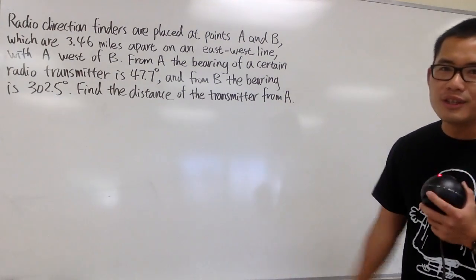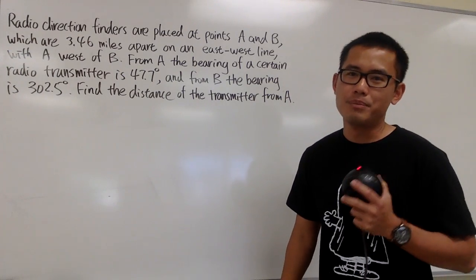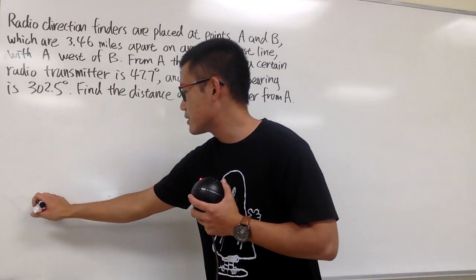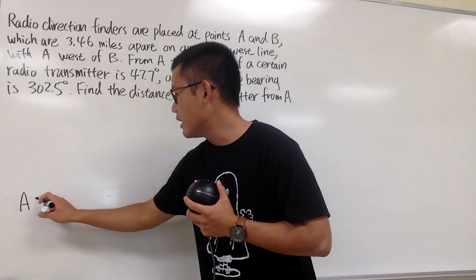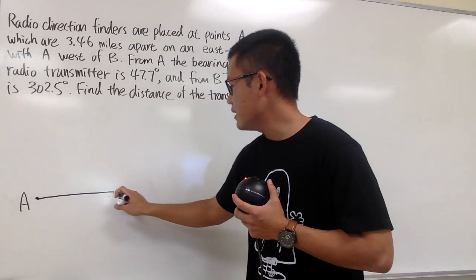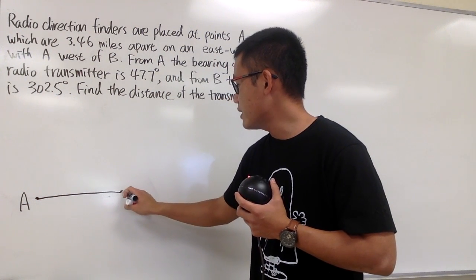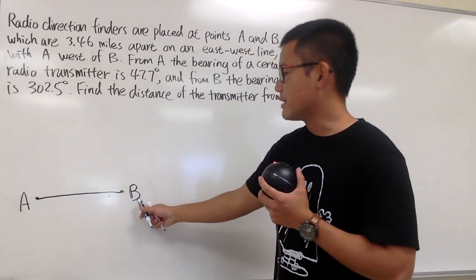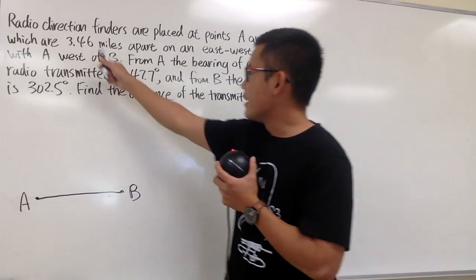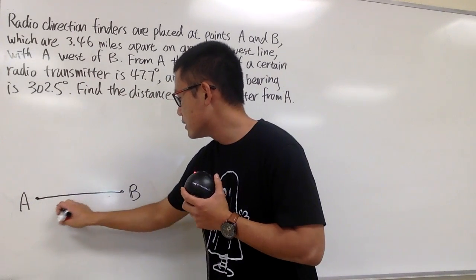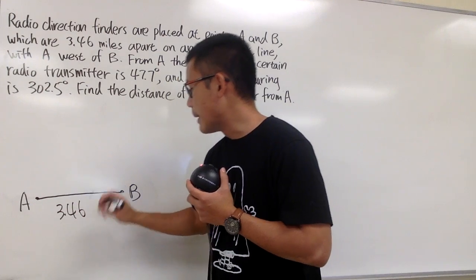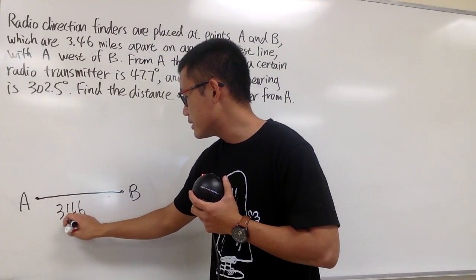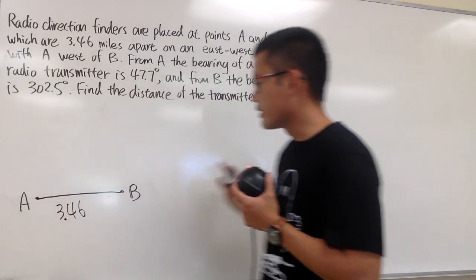For all these kinds of questions, we definitely have to draw a picture first. Let me mark point A and draw a horizontal line, and point B is to the right. A is on the west, B is on the east, and we know that they are 3.46 miles apart. I'll write this down without units and put the unit on at the end.